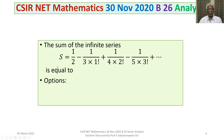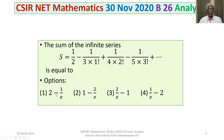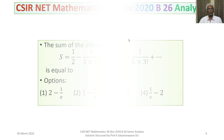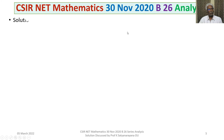The four options are given to us. Option 1: 2 minus 1/e. Option 2: 1 minus 2/e. Option 3: 2/e minus 1. Option 4: 1/e minus 2. Let us now discuss the solution of the problem in detail.